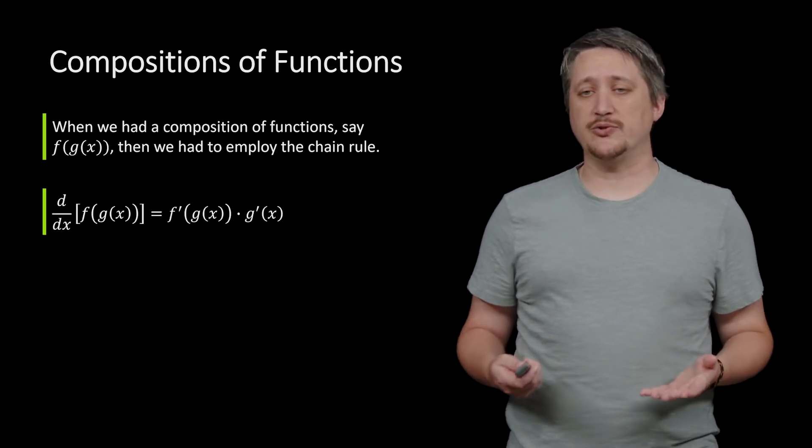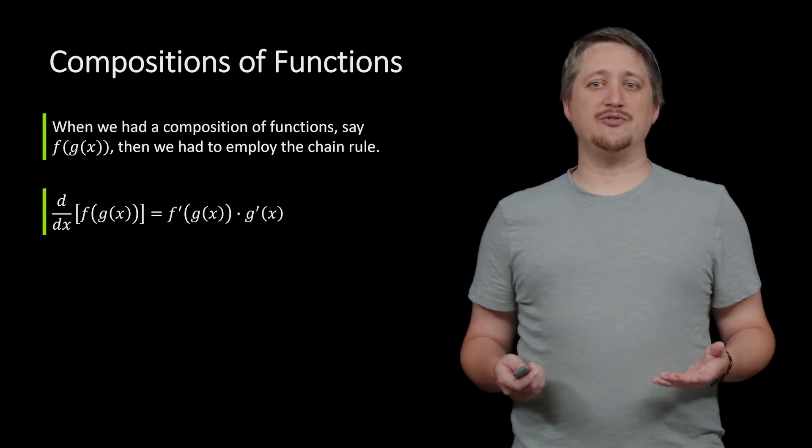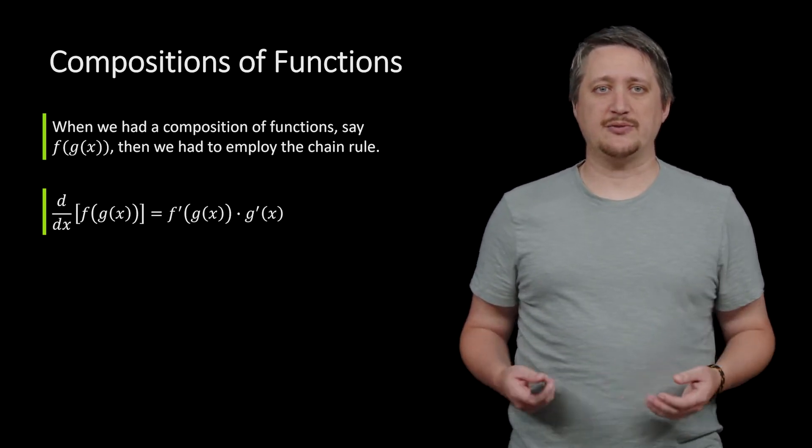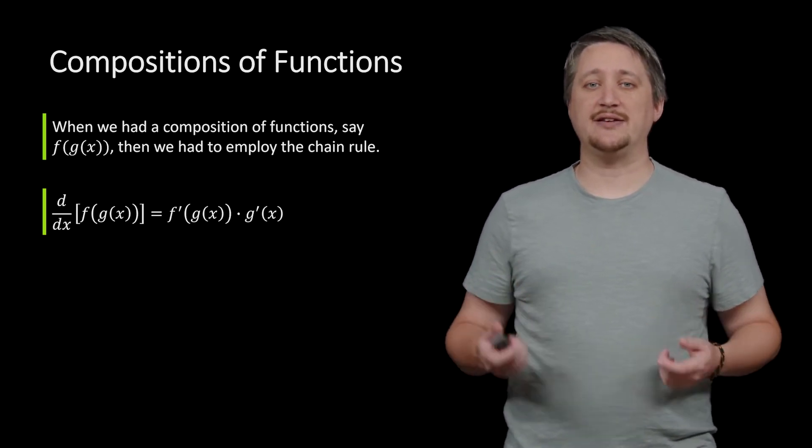So in particular, when we took the derivative of f of g of x, we had this f prime of g of x times g prime of x. We had that piece come outside and take the derivative.